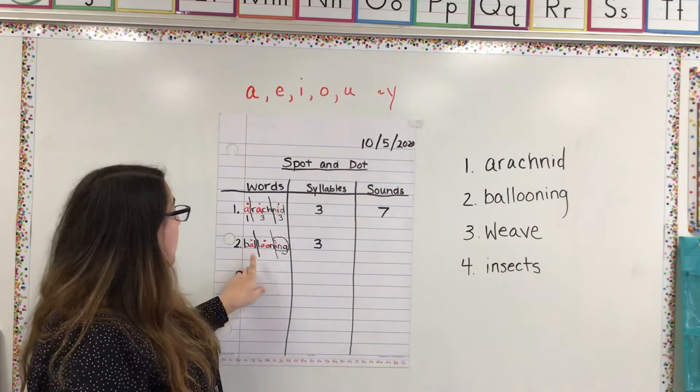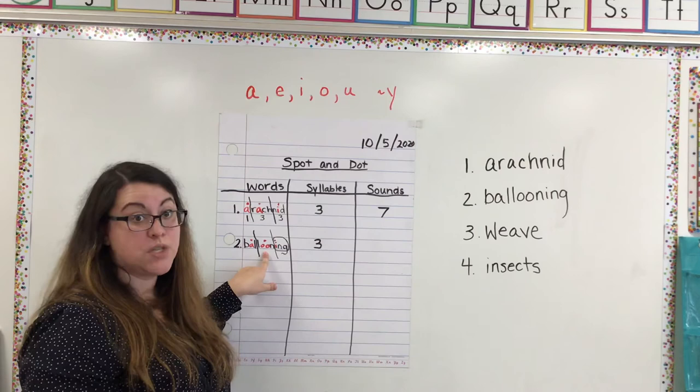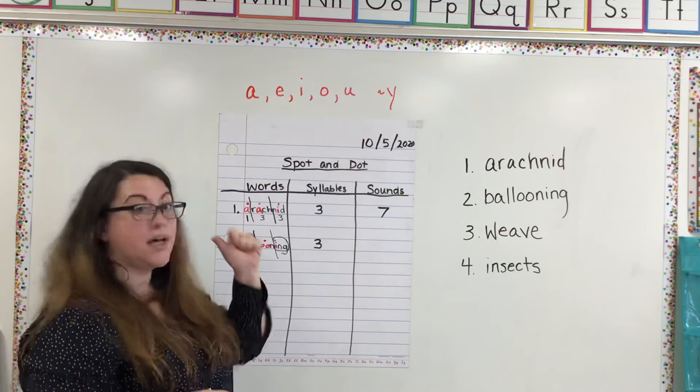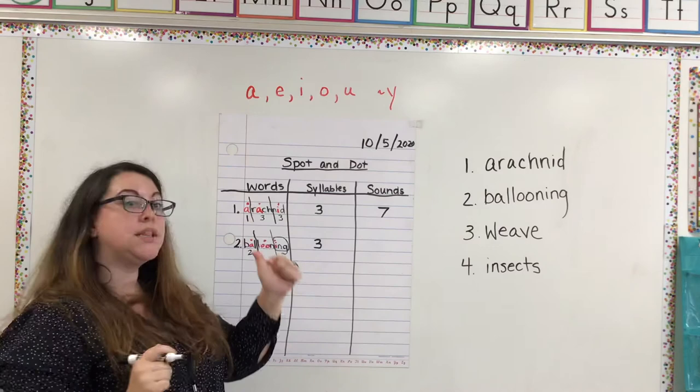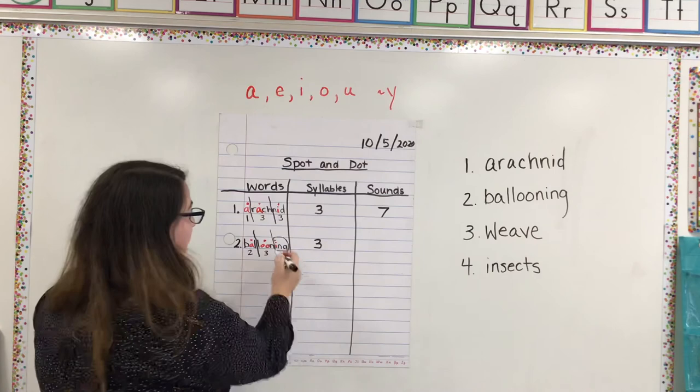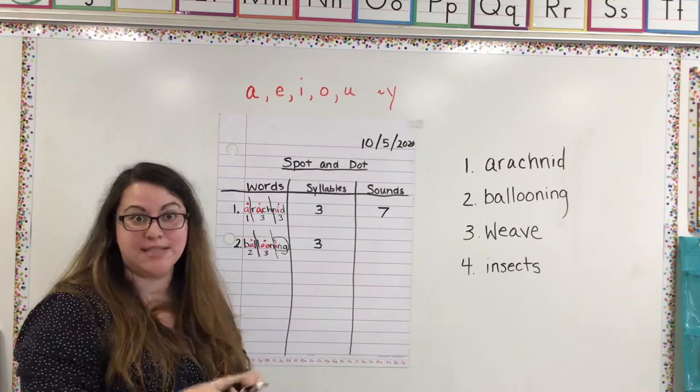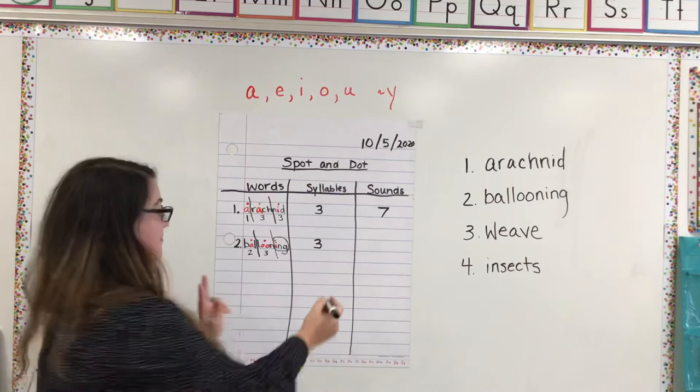So now we have to figure out our sounds. And one more tricky thing to keep in mind. When you have the double consonant, we only count the sound one time. And I know this can be really confusing. So what I like to do is I count it the second time. So I kind of just ignore the L here, and I'll look at it here. So, we've got ba-uh-two. And now we're going to look at the L. L-oon, so we're gonna have two sounds there.